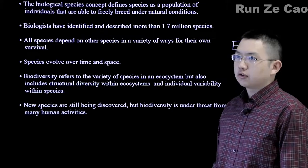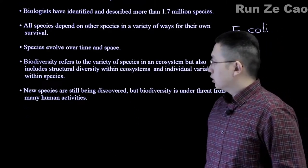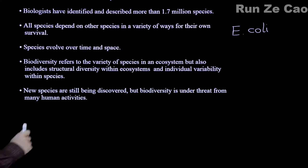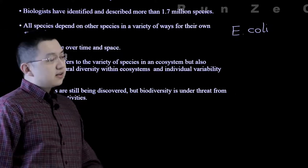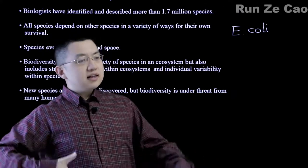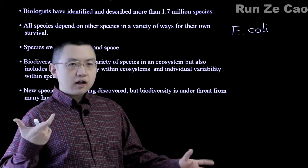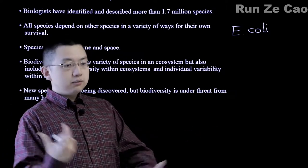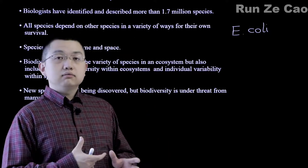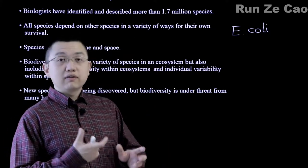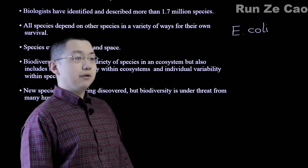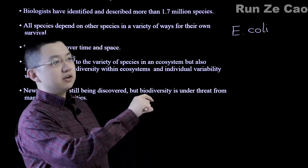E. coli can pick up genes for extra flagella or other traits. Species evolve over time and over space — often space is required so that isolation of populations can occur, and they accumulate differences from one another until, when the barrier is removed, they don't recognize each other. Sometimes you don't even need a barrier; this can still isolate into two populations, for example bottom feeders and surface feeders in a lake.